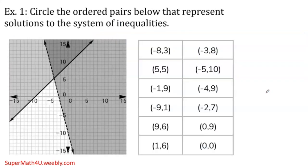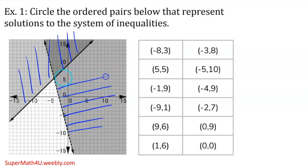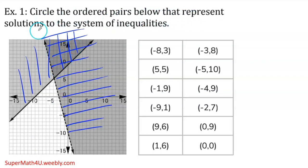Let's do another one. They're giving me a system that's already graphed. If you notice, here is darker — because here is the intersection between the two shaded regions. We need to look where the two shades are intersecting. They're intersecting here on the top. The only question they're asking you — and this should be an easy question — is circle the ordered pairs below that represent solutions.